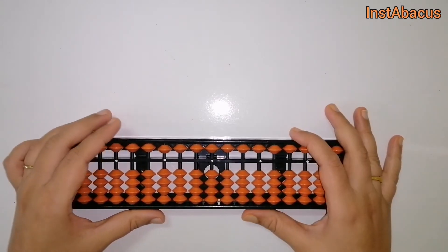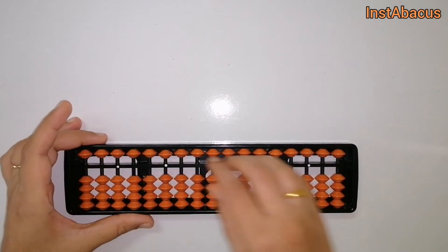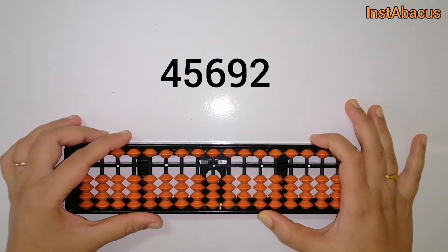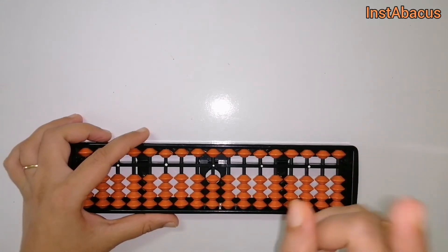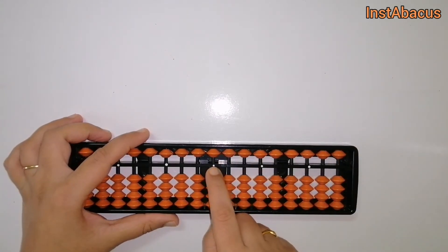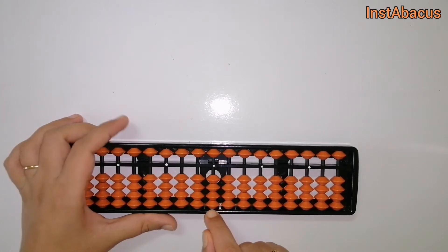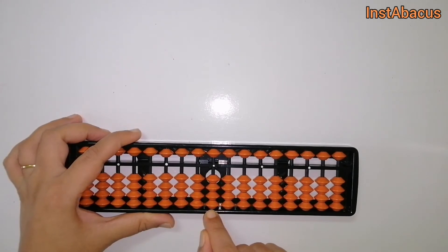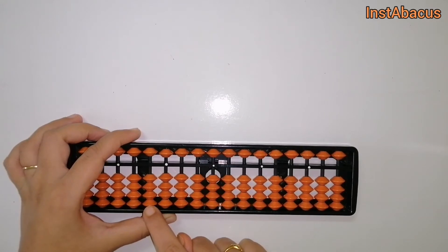Without wasting our time, let's go ahead and set these numbers on our abacus. Let's start with 45,692. This is our unit point here, so this becomes the units place. Now to set 45,692, we will start with the ten thousands place.